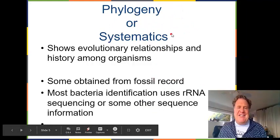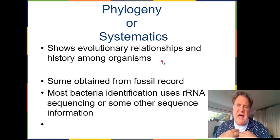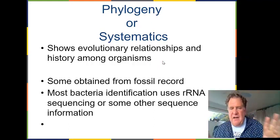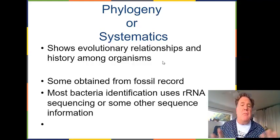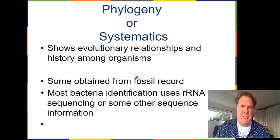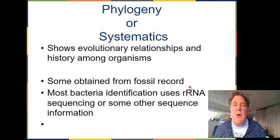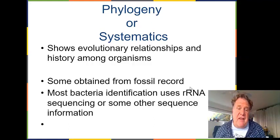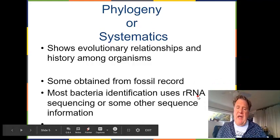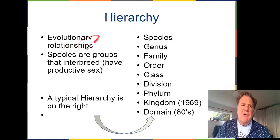In this slide we're talking about phylogeny or systematics. Phylogeny shows the evolutionary relationships and history among organisms. We know organisms are related because they share a common ancestor. In the past we would look at the fossil record, but we can't do that with microorganisms because they don't have hard body parts and don't have many different shapes. So most bacterial identification uses ribosomal RNA — rRNA sequencing or other sequencing information to compare them to one another.